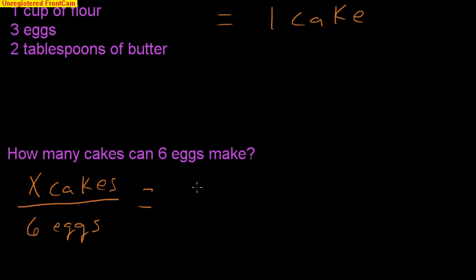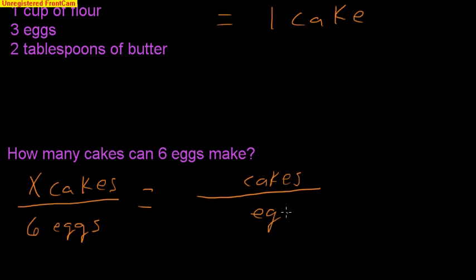Because I've got cakes on the top, let's go ahead and write cakes on the top here, and because I have eggs on the bottom, I'm going to put eggs on the bottom here. The right-hand side of the proportion comes from our recipe. If we look at the recipe, what is the ratio of cakes to eggs? I know that I needed three eggs to make one cake, so the ratio is 3 to 1. For every one cake, I need three eggs.